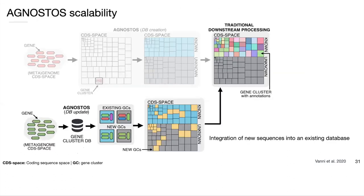A really key feature of Agnostos, especially considering the production rate of new sequence data, is scalability — the possibility to provide a seed database that can be integrated and expanded with new genomic and metagenomic datasets. This leads to enrichment of the diversity and content of existing gene clusters, while maximizing the information retrievable for newly integrated sequences.